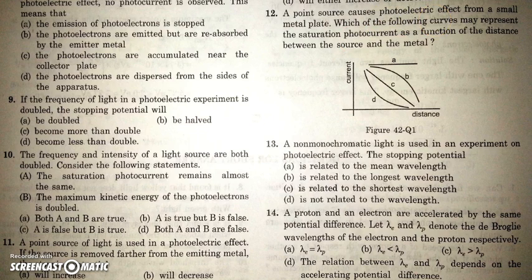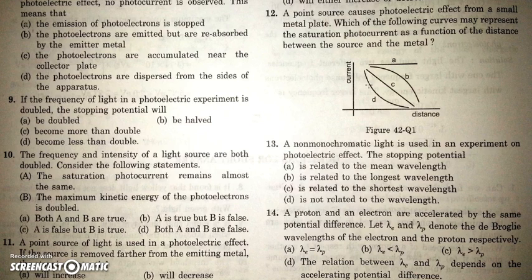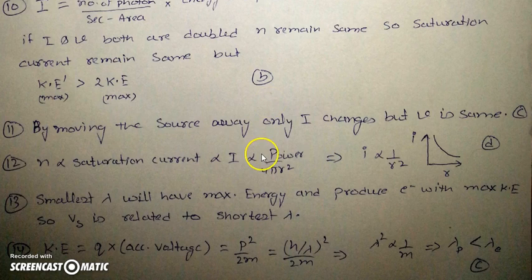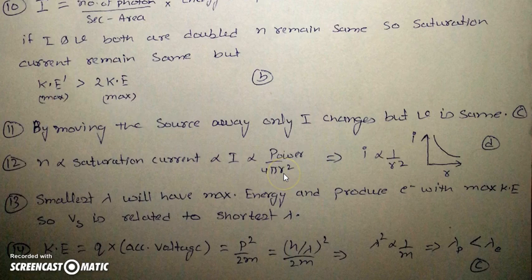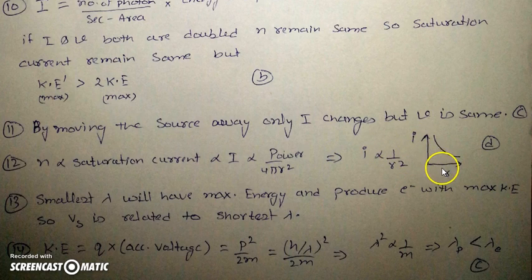The next question asks which curve represents saturation photo current as a function of distance from a point source. As distance increases, intensity decreases. The number of photons per second n = Power / (4πr²), so saturation current is proportional to 1/r². Therefore the correct curve shows an inverse-square relationship between current I and distance r — option D is correct.